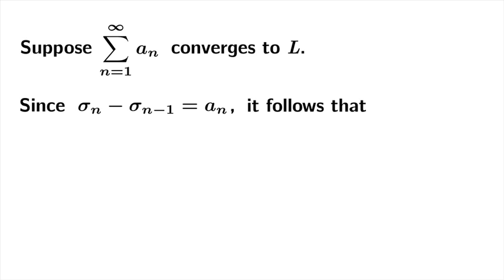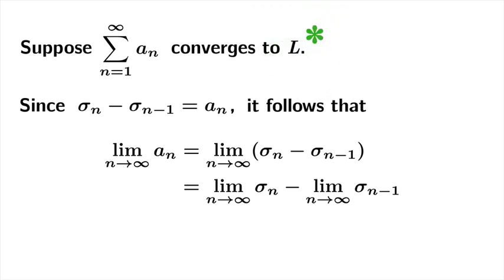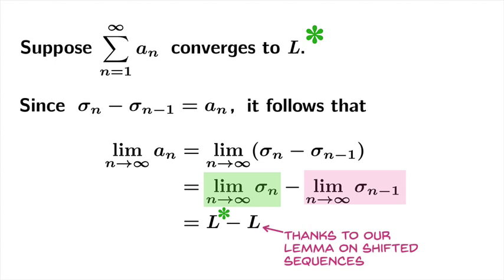Since this is true, to analyze the limiting value of a_n, we can look at the limiting value of the difference sigma_n minus sigma_{n-1}. A limit law says we can take the difference of those limits. We've assumed the series converges to L, so the limit of sigma_n equals L. By the shifted sequence lemma, the limit of sigma_{n-1} also equals L. Therefore, the limiting value of a_n as n goes to infinity must be 0.